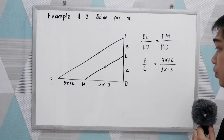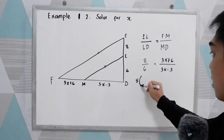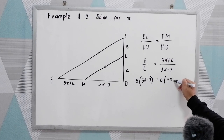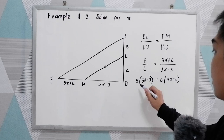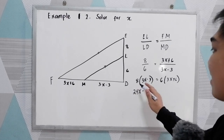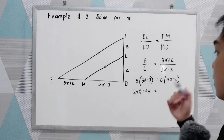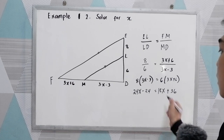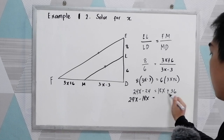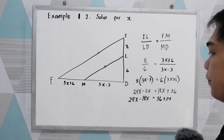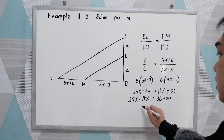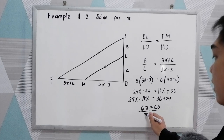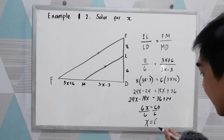To solve for X, we cross-multiply: 8 times (3X minus 3) equals 6 times (3X plus 6). Distributing gives 24X minus 24 equals 18X plus 36. Then 24X minus 18X equals 36 plus 24, so 6X equals 60, and X is equal to 10.